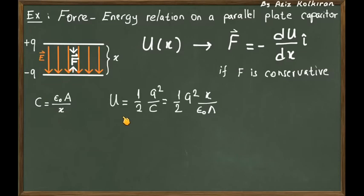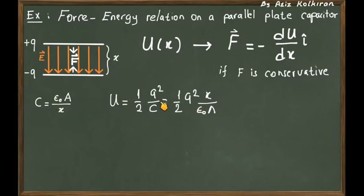If we express the potential energy in terms of the charge and the capacitance, keeping the charge constant, we express the potential energy in terms of the constant charge times the inverse of the capacitance. Since capacitance changes with the distance between the plates, we have: U = (1/2) × q² × x divided by ε₀ × A.